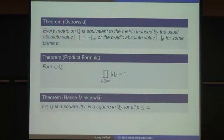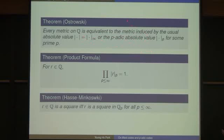There is a very famous theorem by Ostrowski: every metric on Q is actually one of the p-adic absolute values or the usual absolute value. So the p-adic absolute values are as important as the usual absolute value — the usual absolute value is, in fact, just one of many absolute values. And the product formula holds.